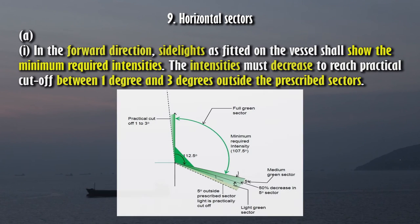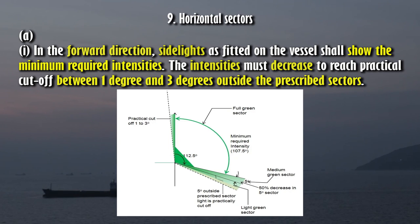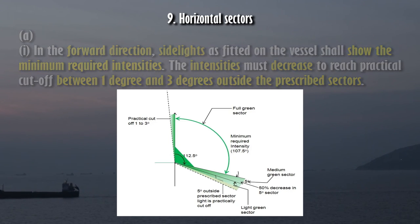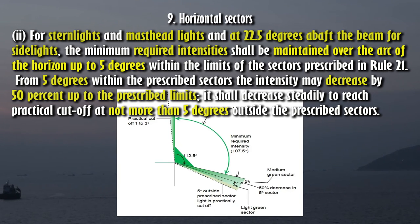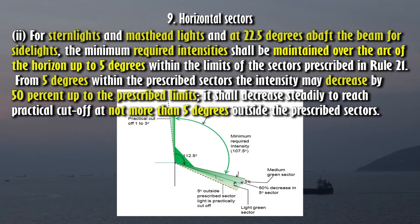Section 9 — Horizontal Sectors. (A)(1) In the forward direction, side lights as fitted on the vessel shall show the minimum required intensities. The intensities must decrease to reach practical cutoff between 1 degree and 3 degrees outside the prescribed sectors. (2) For stern lights and masthead lights, and at 22.5 degrees above the beam for side lights, the minimum required intensities shall be maintained over the arc of the horizon up to 5 degrees within the limits of the sectors prescribed in Rule 21. From 5 degrees within the prescribed sectors the intensity may decrease by 50% up to the prescribed limits, and shall decrease steadily to reach practical cutoff at not more than 5 degrees outside the prescribed sectors.